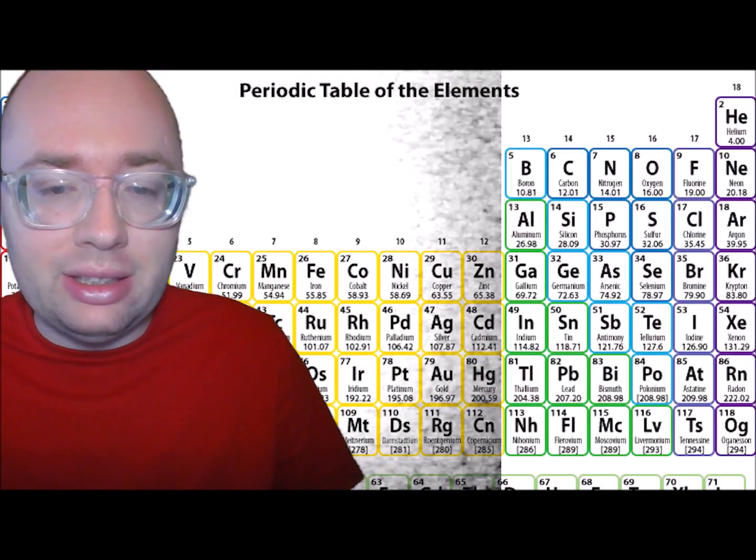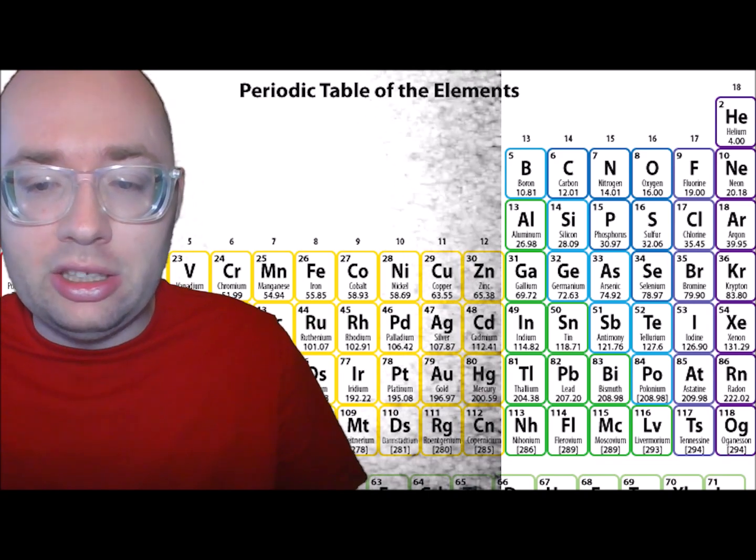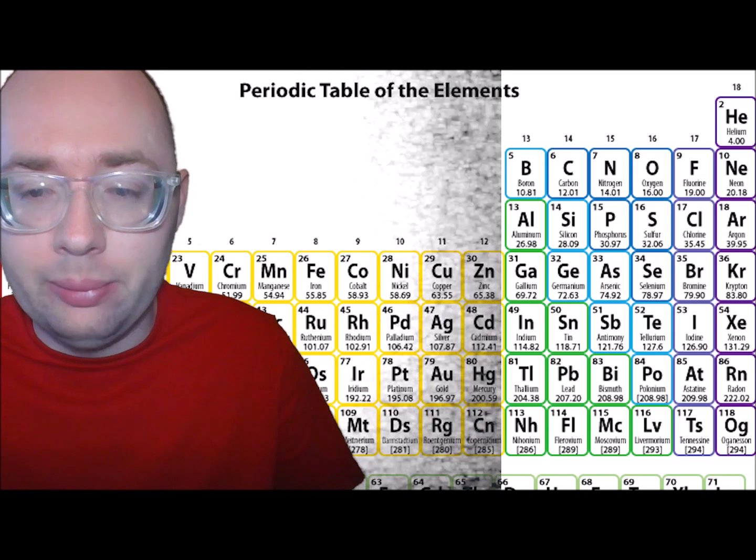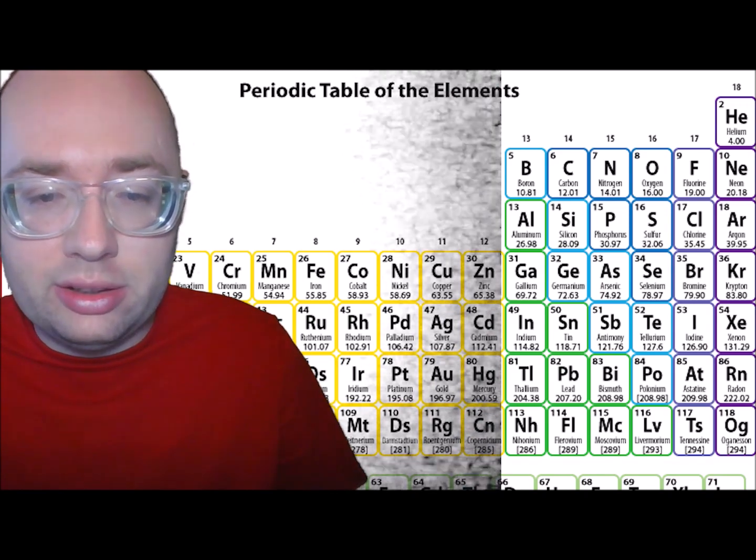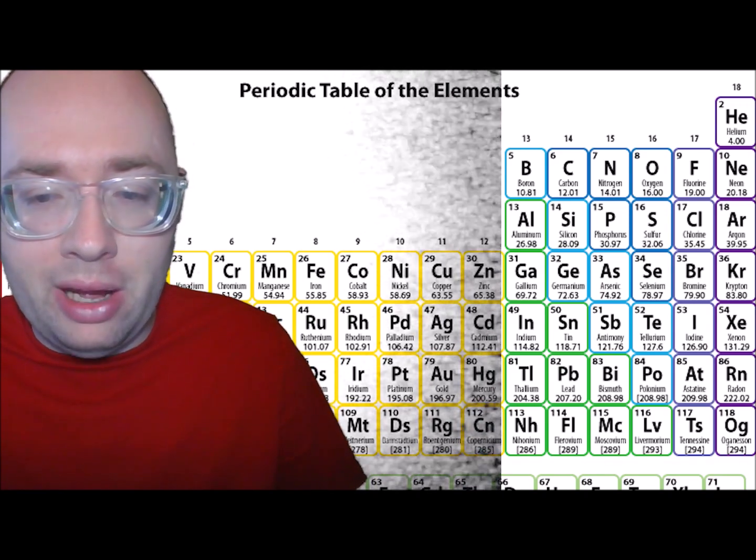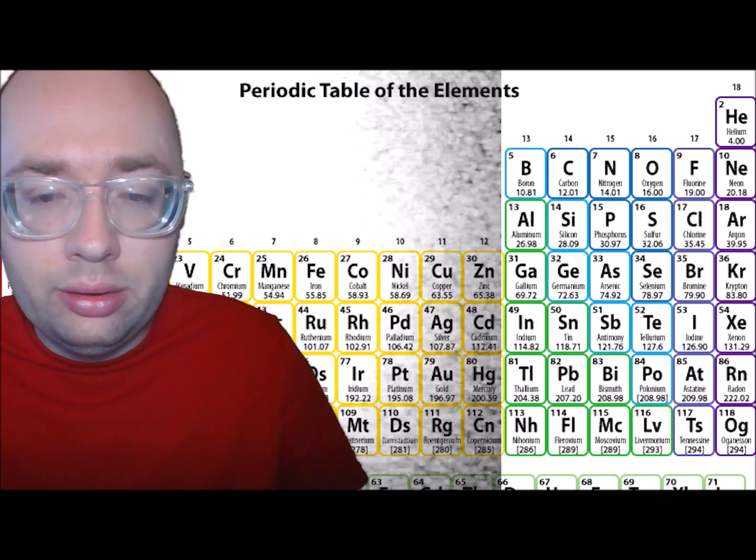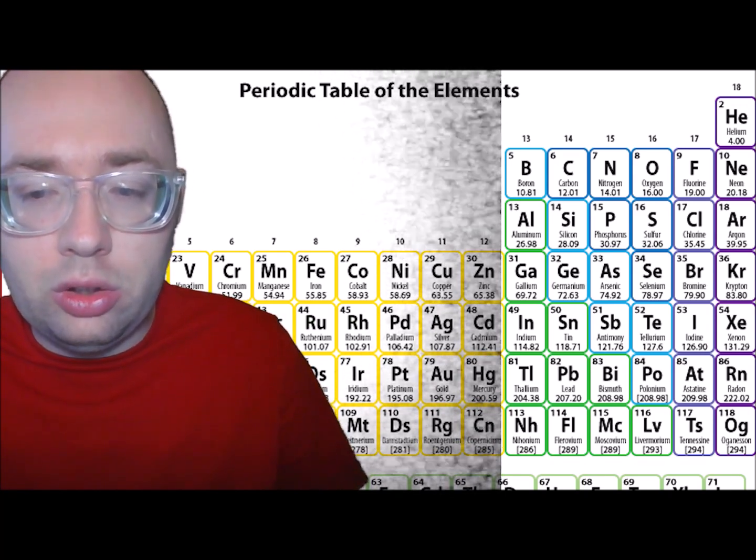But first, what is an element? An element is a pure substance that is made from a single type of atom. Elements are the building blocks for all the rest of the matter in the world. Examples of elements include iron, oxygen, hydrogen, gold, and helium.